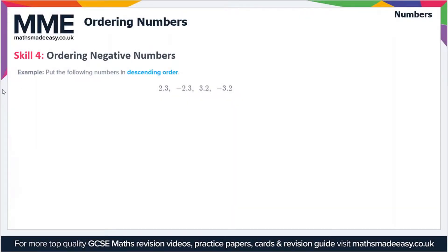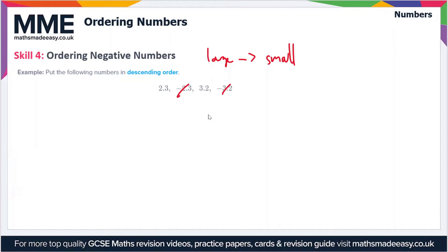The next skill we'll look at is ordering negative numbers. In this case we have to put the following numbers in descending order — that means largest to smallest. When considering negatives, the more negative a number is — in other words, the larger the number after the minus sign — the smaller we consider it to be. We have 2.3, -2.3, 3.2 and -3.2. Crossing out the minus signs first, we have 2.3 and 3.2; obviously 3.2 is larger, then 2.3.